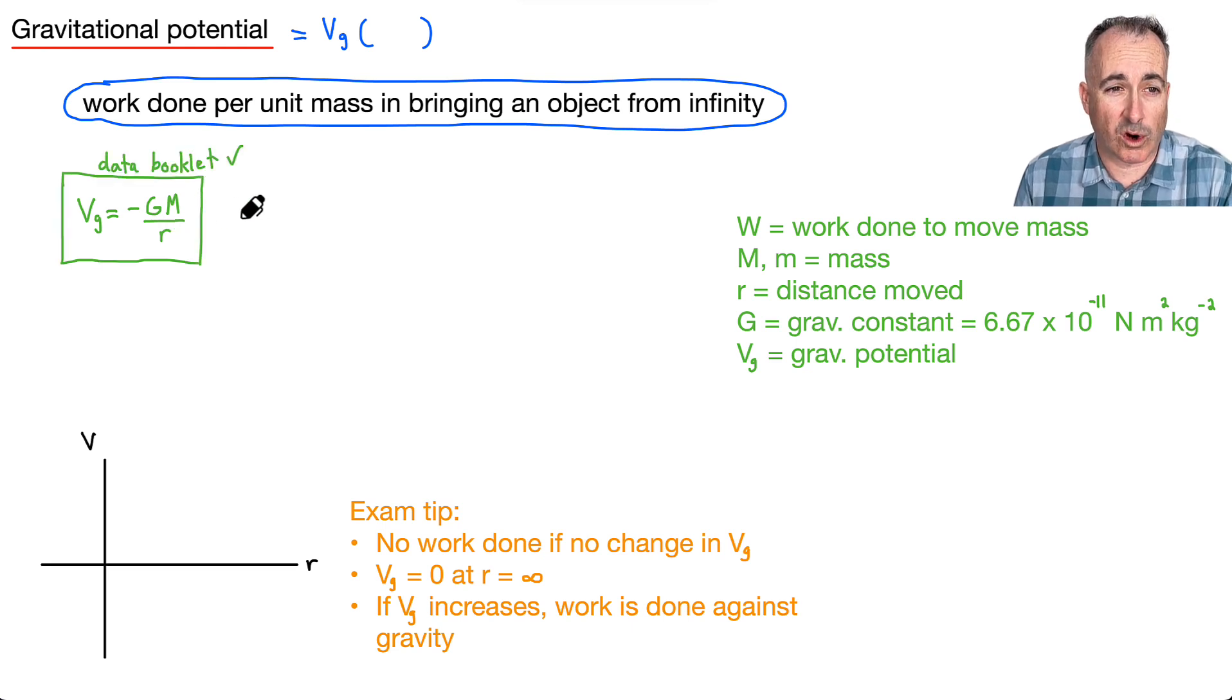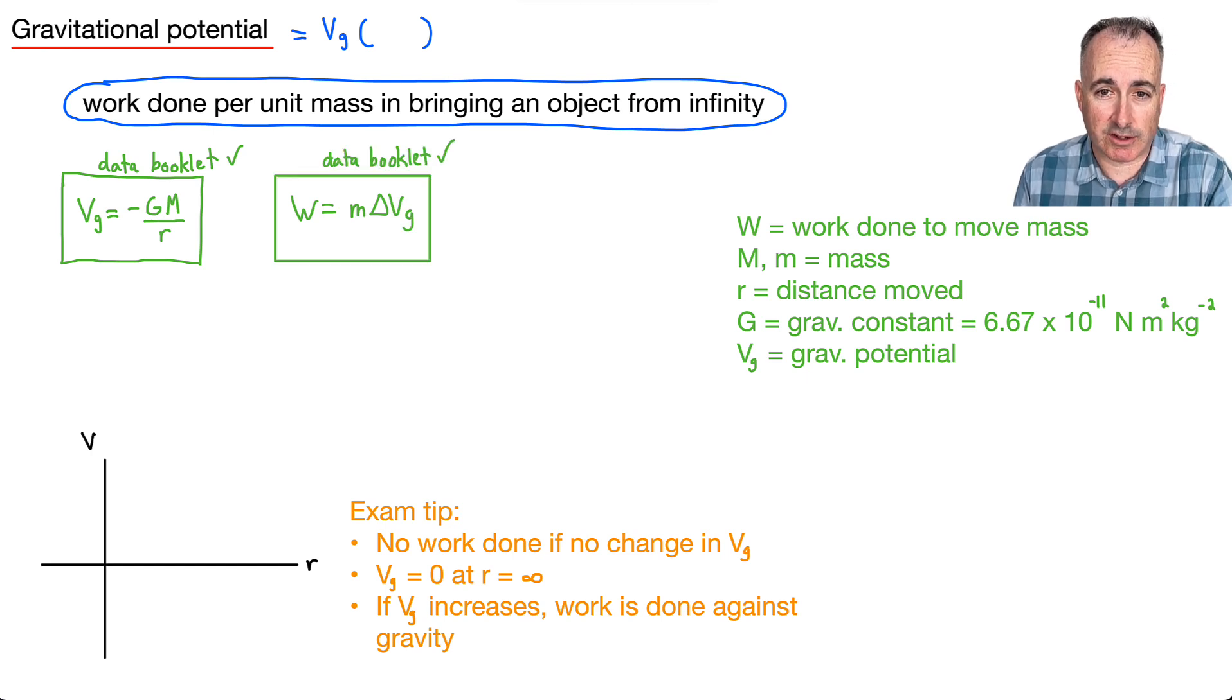Now because we're talking about work done, I think it's maybe a good idea to put that one here. So we have an equation for work done as well, which just goes like this. It's work done is m times delta Vg. So both of these are in your data booklet, so you don't have to memorize them. And let's look at all the variables. So W is the work done to move a mass, well that must be in joules. m's, those are masses, so that's in kilograms. r is a distance moved, so that must be in meters. We have a gravitational constant, sure.